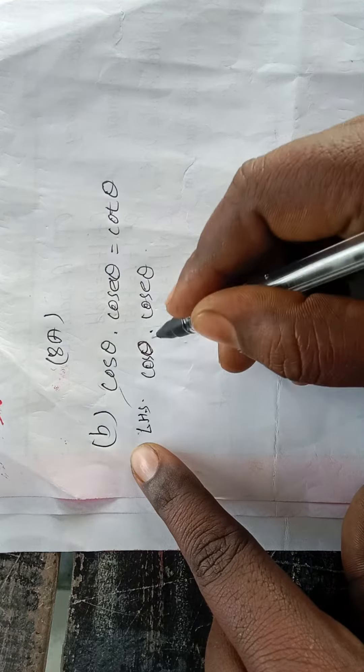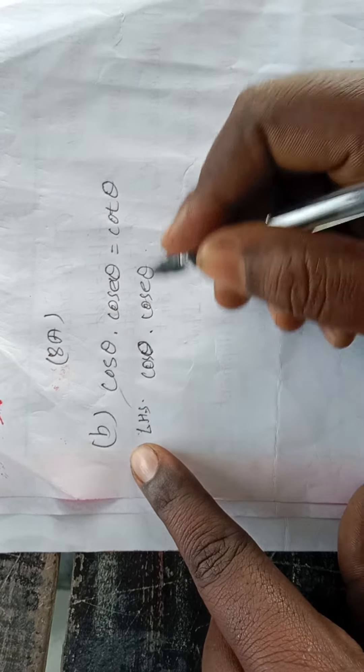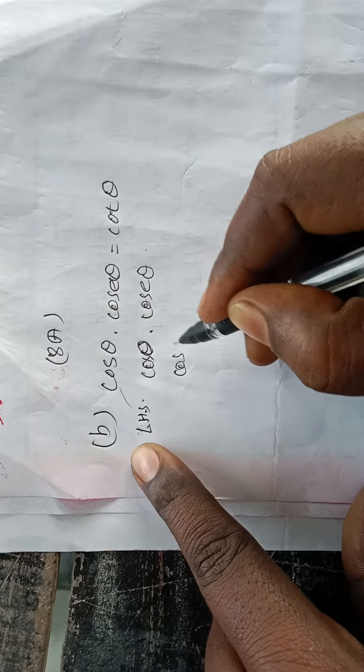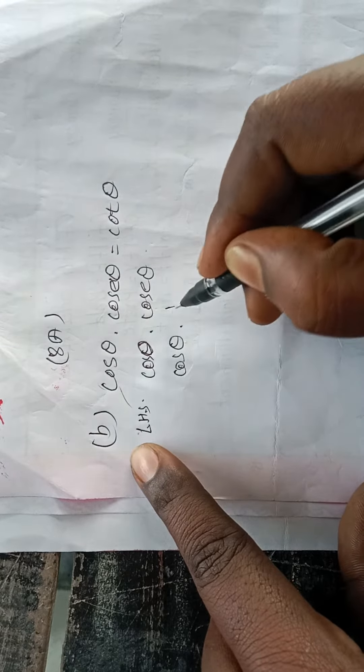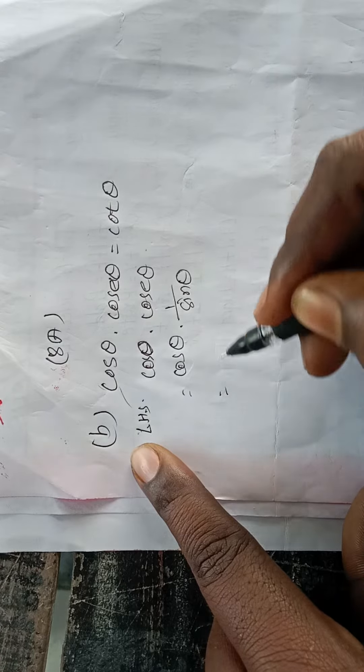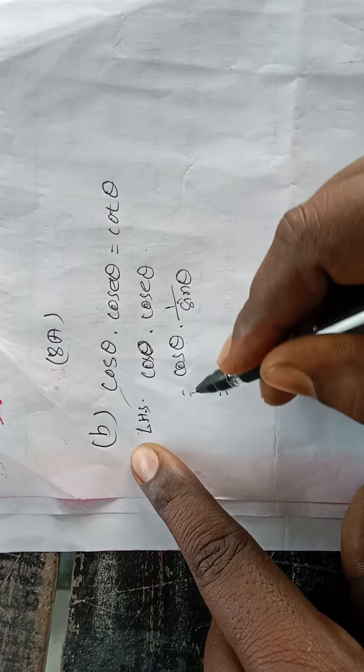cos θ · cosec θ. Cosec θ means 1 by sin θ. So cos θ · cosec θ = cos θ · (1/sin θ) = cos θ/sin θ = cot θ.